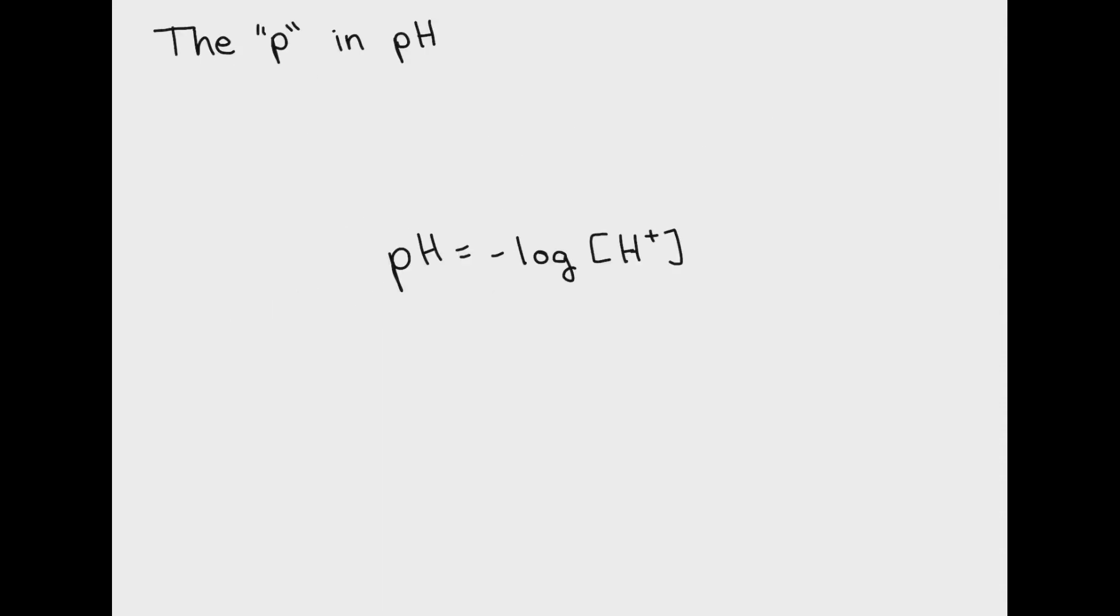But first let's talk about what the p in pH means. Most of you probably recognize this formula pH equals negative log of H+, but what you probably don't know is that the p represents the negative log and the H represents the H+ concentration. So what pH really means is take the negative log of whatever follows the p. In this case, because an H follows the p, this means take the negative log of the concentration of H+. This also is the same for pKa and pOH. The p simply means take the negative log of whatever follows the p.